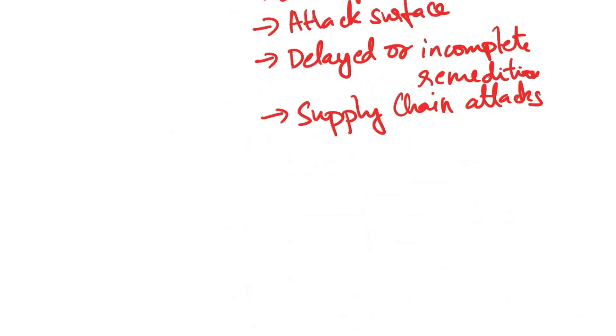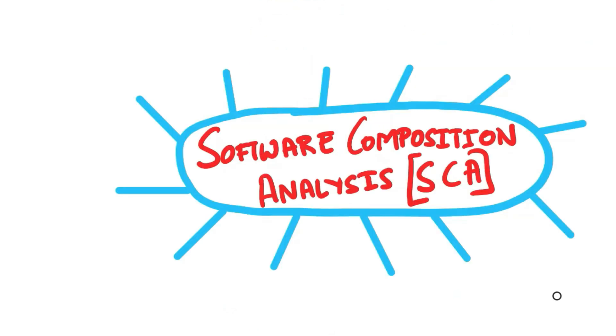Now that we know why we require software composition analysis tools, let's see the process of software composition analysis. SCA involves several steps to identify, assess, and manage the third-party dependencies and open-source software components used in a software project. Let's see the detailed description of the SCA process.